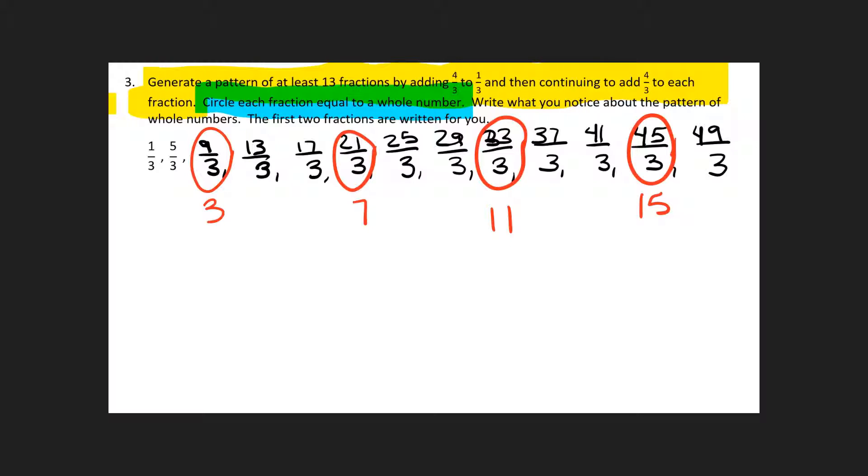The next step wants us to write what we notice about the pattern of the whole numbers. And if I look at these numbers, there's a couple different patterns we can see. One pattern is that the whole numbers have added 4 in between. 3 plus 4 is 7, 7 plus 4 is 11, 11 plus 4 is 15.